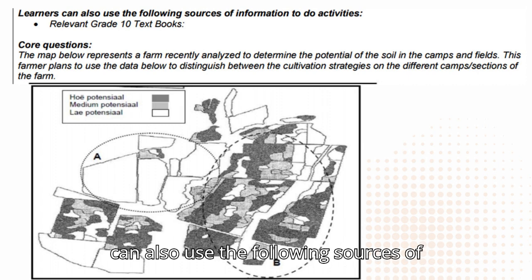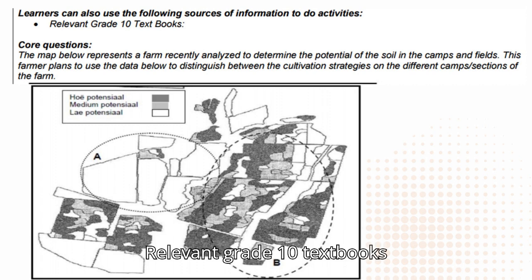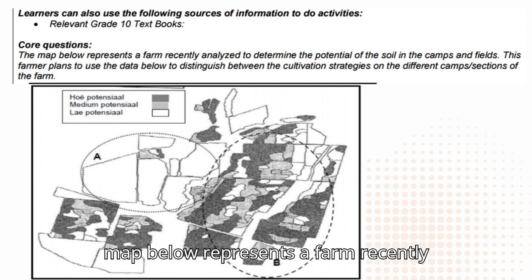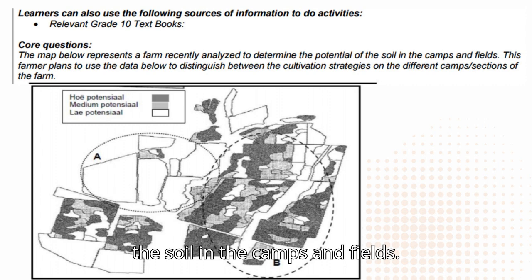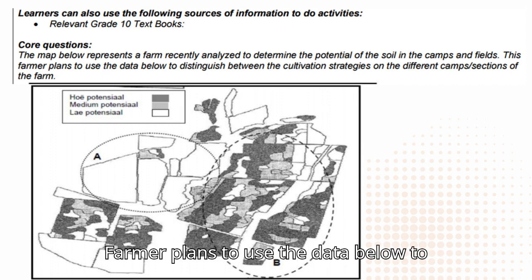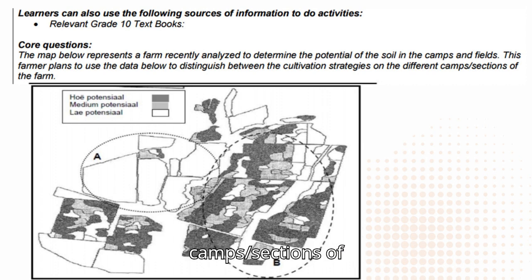Learners can also use the following sources of information to do activities: relevant Grade 10 textbooks and core questions. The map below represents a farm recently analyzed to determine the potential of the soil in the camps and fields. The farmer plans to use the data to distinguish between the cultivation strategies on the different camps and sections of the farm.